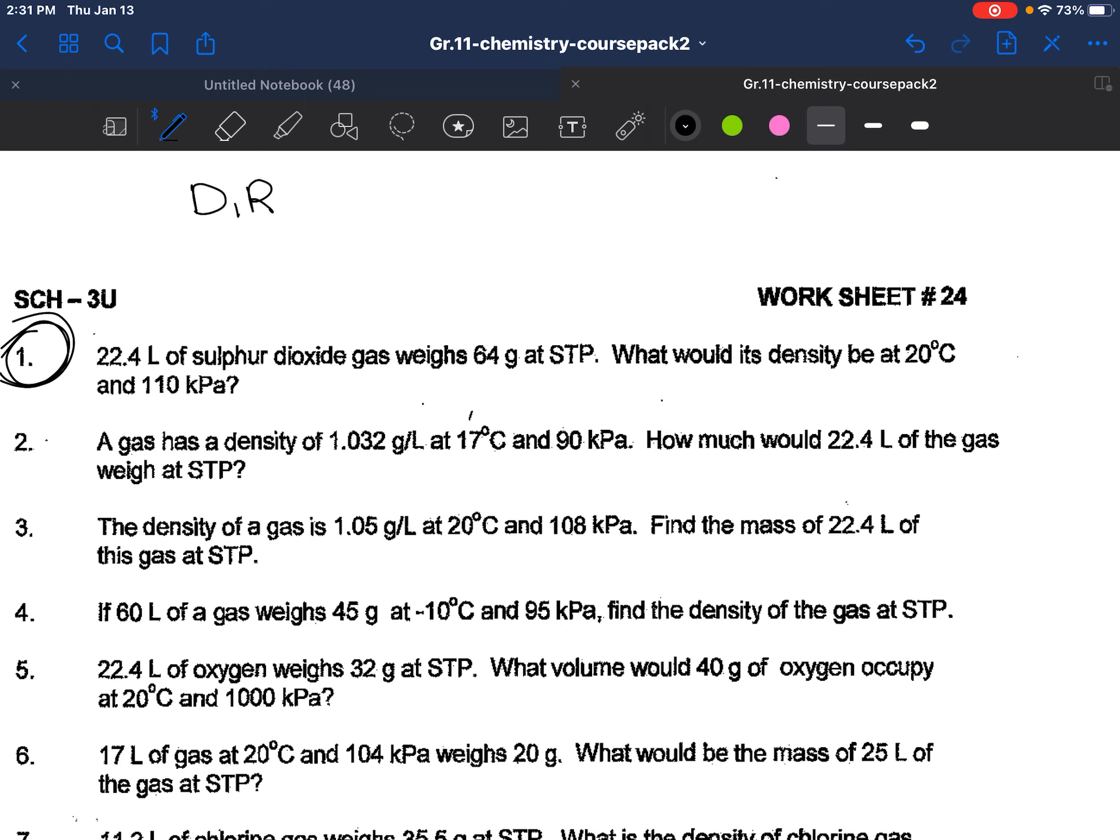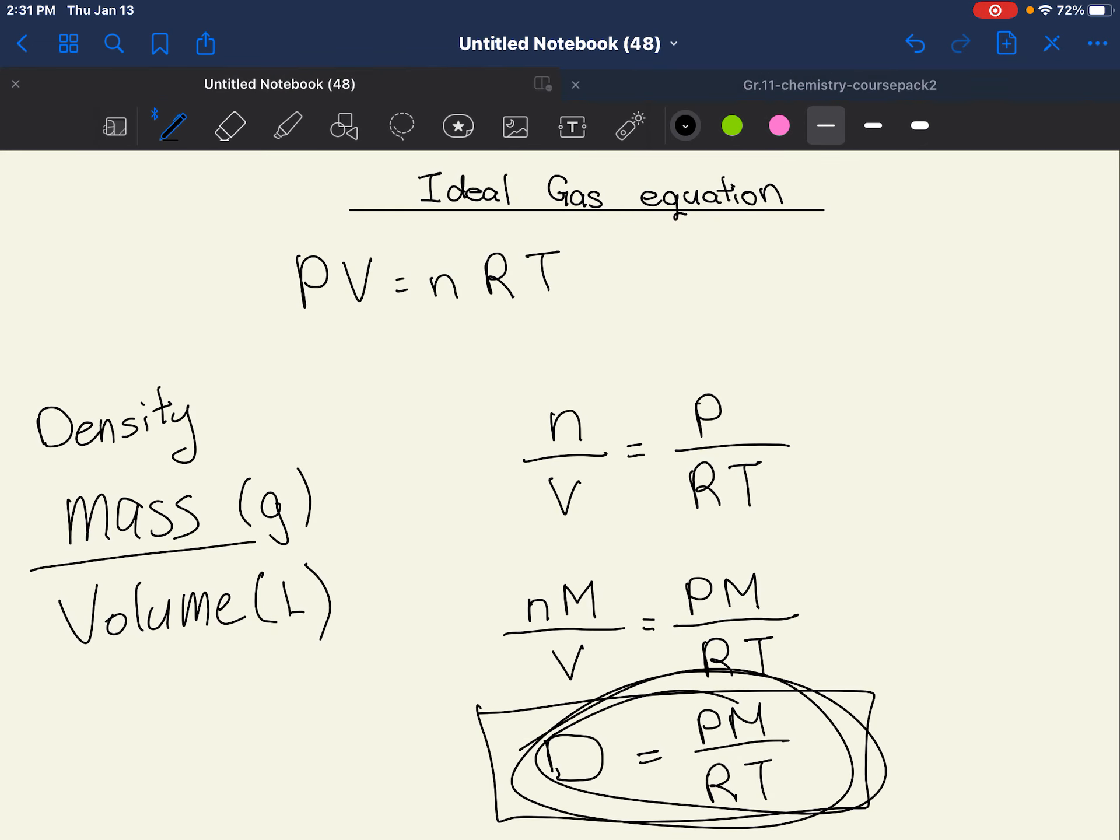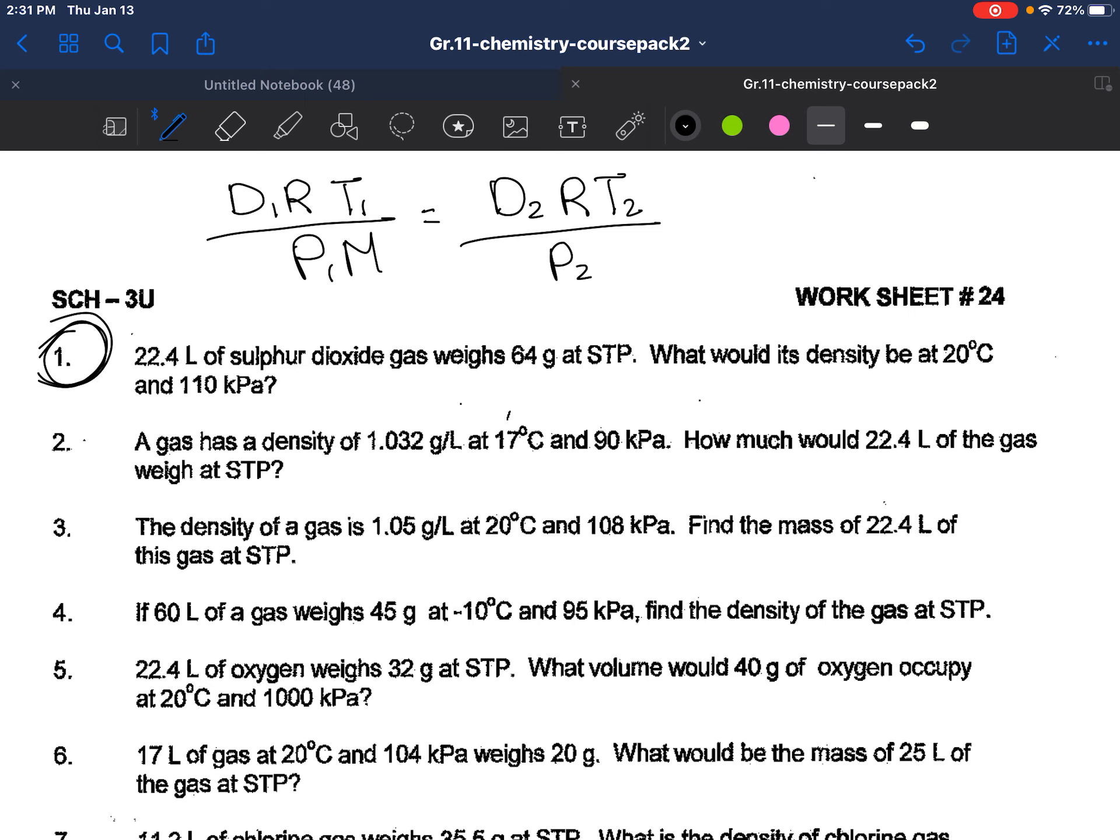So you can have D1, T1, P1 is equal to D2, T2, P2. Based off of this. Because if you isolate everybody on one side, that would be D, R, T over P, M. I guess I put M here, just for the sake of having M there. And obviously there's no such thing as M1 and M2, because molar mass is a constant, right?